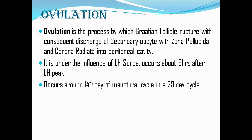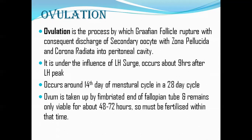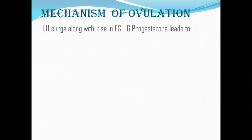The ovum is picked up by the fimbriated end of the fallopian tube. It is only viable for 72 hours and can be fertilized within only 48 hours, so fertilization must occur for the zygote to form and the embryo to be implanted. The mechanism of follicular expulsion is complex: during the LH surge, FSH also increases, and as the corpus luteum forms, progesterone is also secreted. Under the influence of LH, FSH, and progesterone, the ovulation process is initiated.